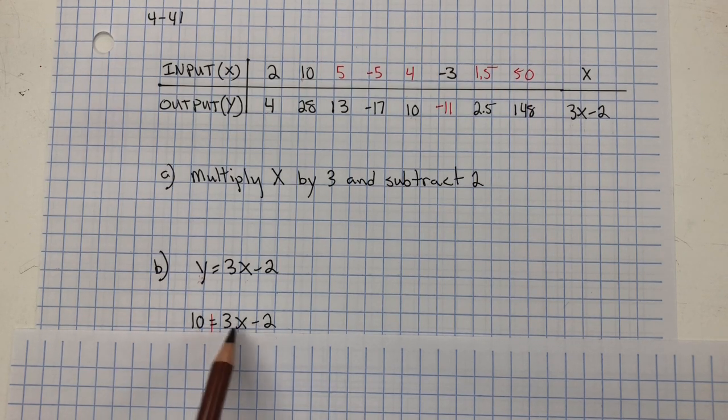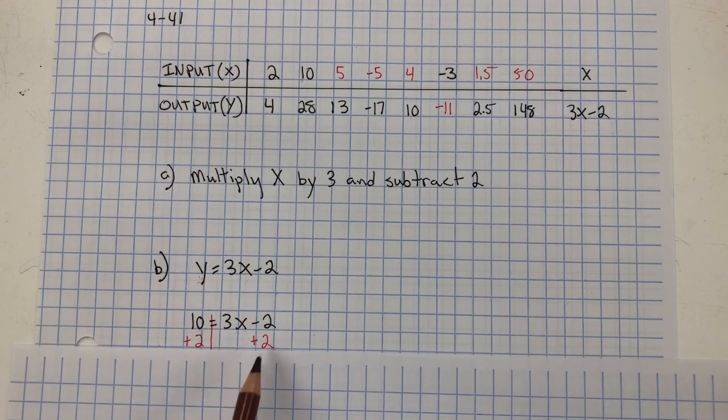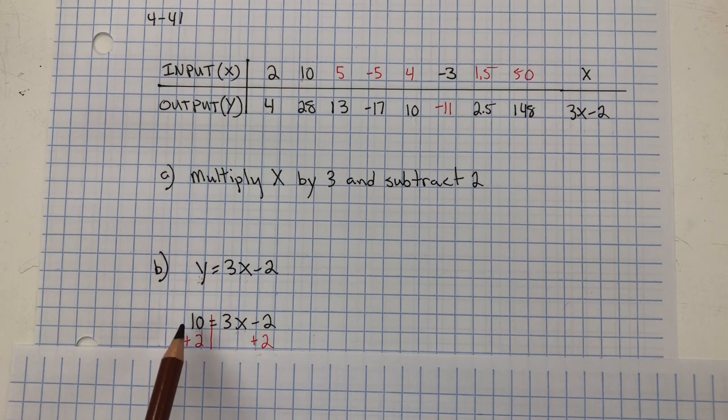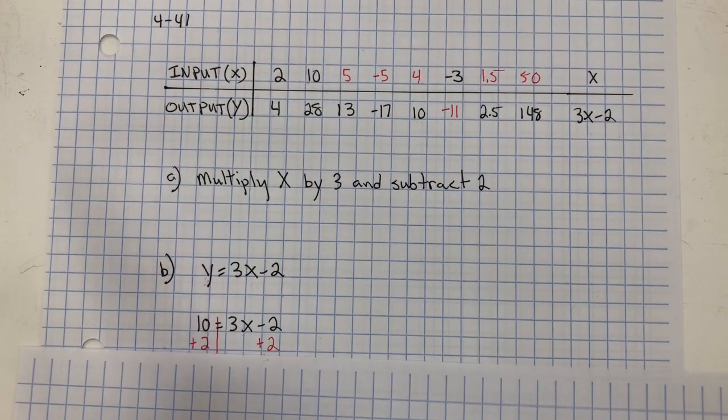So, we need to isolate the variable. So, we're going to do the inverse property of subtraction, which is addition. So, we're going to add 2 to both sides. That creates a zero pair. 10 plus 2 is 12.